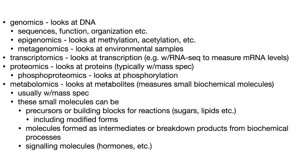Mass spec can also be used to look at things other than proteins. Metabolomics looks at metabolites — basically measuring small biochemical molecules like sugars, lipids, amino acids, etc., including modified forms. You can also measure molecules formed as intermediates or breakdown products from biochemical processes — all those metabolic pathways. Metabolism is just the making and breaking of molecules, and when you have many intermediates in those processes you can measure them. This can tell you if there's a holdup somewhere in the process or some sort of problem. Metabolomics can also detect signaling molecules like hormones.